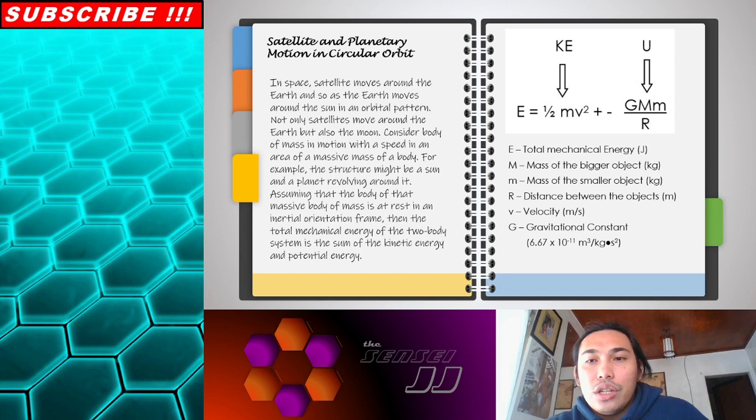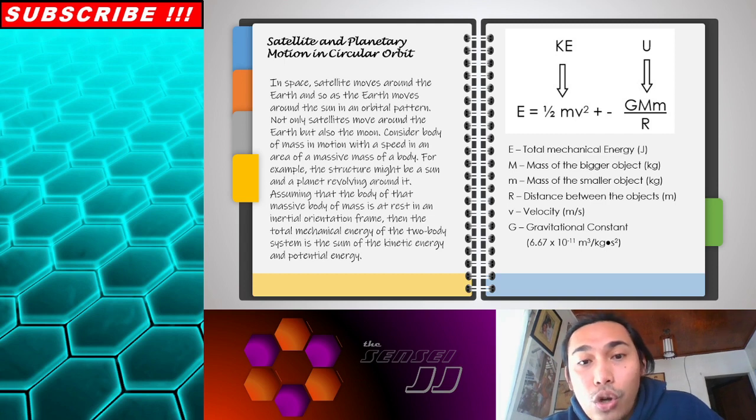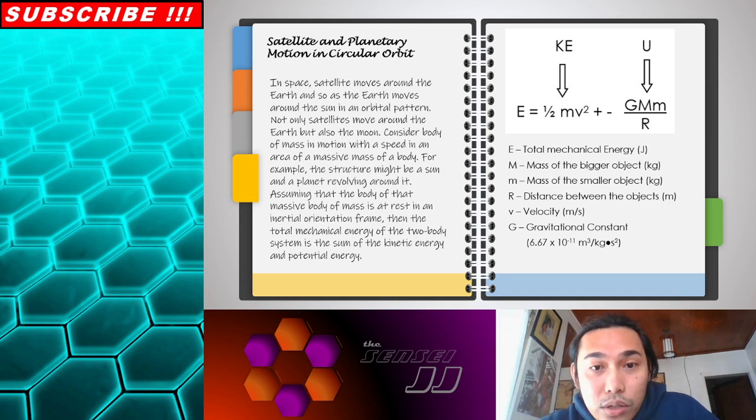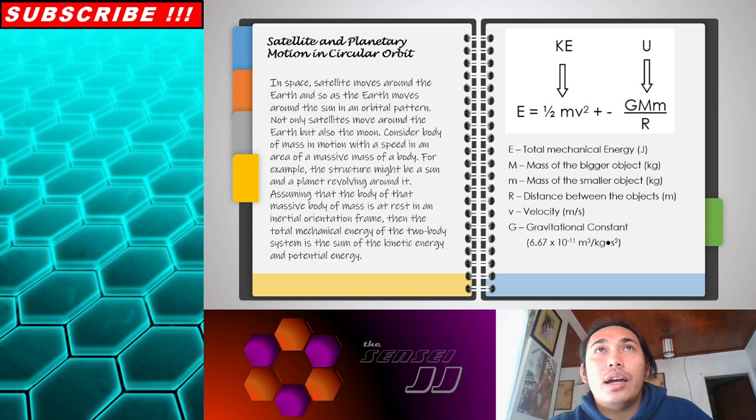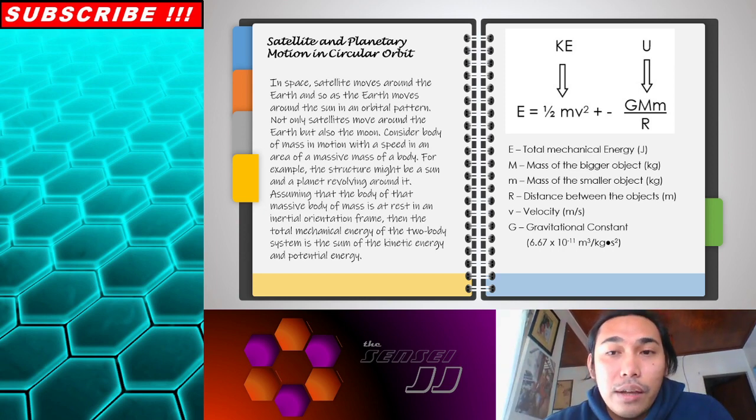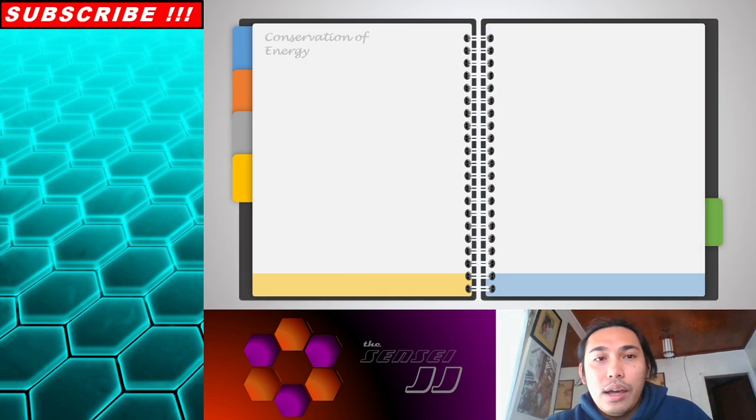Here is our formula - E equals one-half M V squared for our kinetic energy, and U for our gravitational potential energy, G M1 M2 all over R. For the total mechanical energy, the question is why is it negative? Because the gravitational potential is always going away. So it is negative. The direction is not towards, we're thinking of the object moving away.